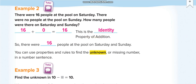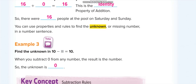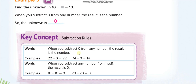Now we have two subtraction rules. The first one: any number minus zero gives you the same number. The second subtraction rule: any number minus the same number equals zero. For example: 22 minus 0 equals 22; 14 minus 0 equals 14; 50 minus 0 equals 50; 1 million minus 0 equals 1 million. And: 16 minus 16 equals 0; 20 minus 20 equals 0; 50 minus 50 equals 0; 1 million minus 1 million equals 0.